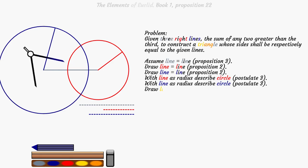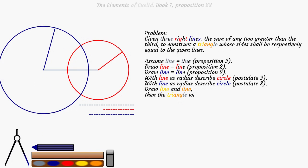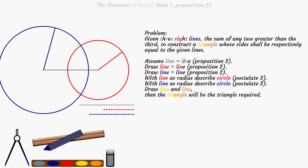Draw a yellow and an orange line, then the triangle will be the triangle required.